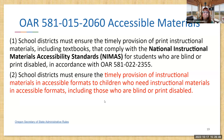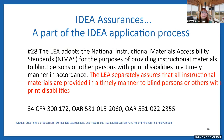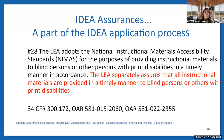IDEA assurances are things that we as the state — the SEA, or state educational agency — have to sign off on and agree to. Number 22 of our assurances states that the LEA adopts the National Instructional Materials Accessibility Standards — NIMAS — for the purpose of providing instructional materials to blind persons or other persons with print disabilities in a timely manner. In other words, we have to sign off on it and so does your LEA. LEAs also separately assure that all instructional materials are provided in a timely manner to blind persons or others with print disabilities. NIMAS can also be used for other people — you do not have to be blind.